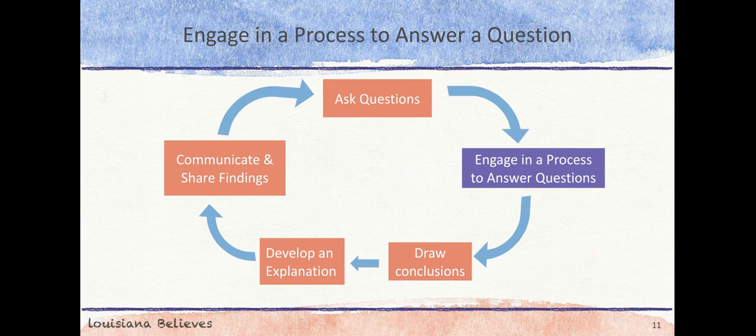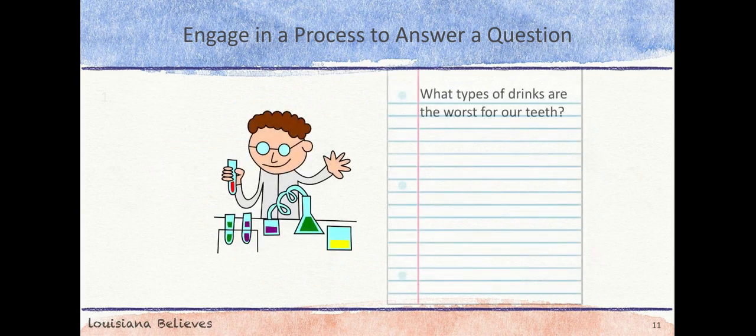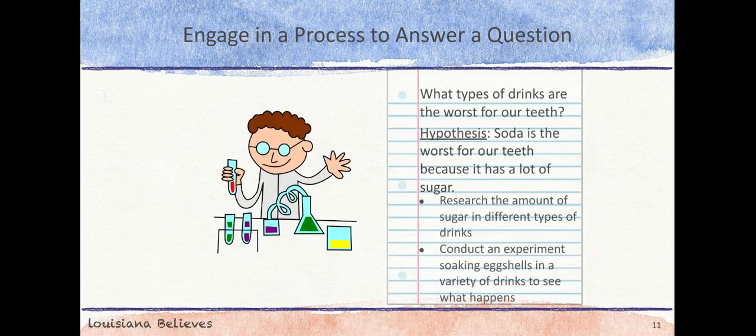Now, let's think back to our question. If we want to know which drink is the worst for our teeth, we might want to make a plan to research the amount of sugar in a variety of drinks. We might also test our hypothesis by soaking eggshells in different liquids to see what happens to them. It will be easier to use eggshells instead of someone's teeth.